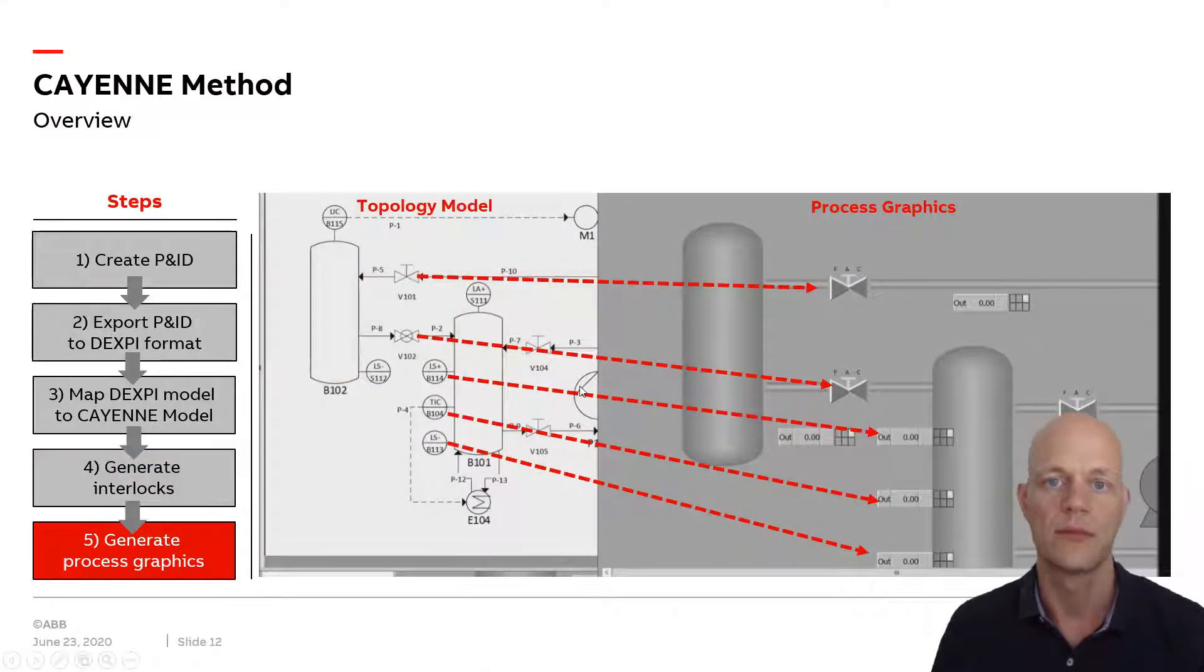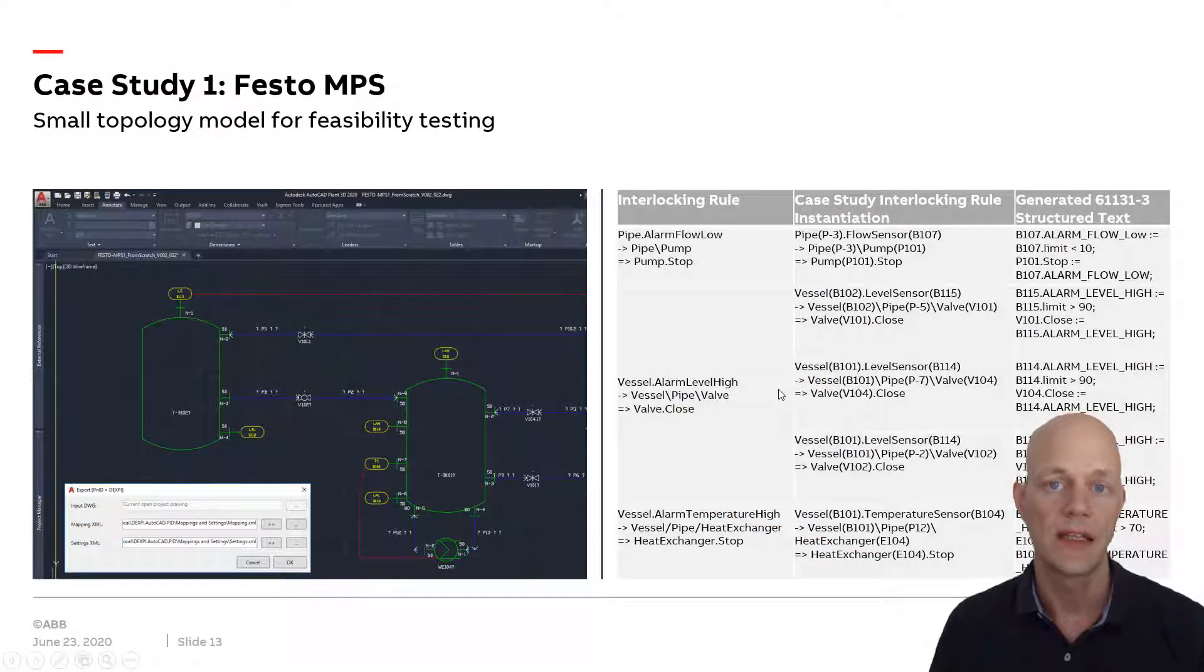In the fifth step, we generate process graphics. Process graphics are used by human plant operators to control the plant. They get their sensor readings overlaid over a schematic drawing of the plant, very similar to a P&ID. This involves a simple mapping between the graphical information of the topology model and the process graphics. We've done that for one of the ABB control systems.